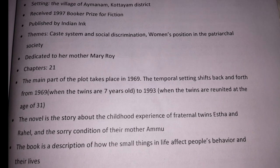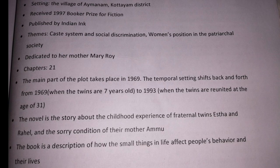The main part of the plot takes place in 1969, and the temporal setting shifts back and forth from 1969 when the twins are seven years old to 1993 when the twins are reunited at the age of 31 at the end of the novel. The novel is the story about the childhood experience of the fraternal twins Estha and Rahel, and the sorry condition of their mother Ammu. The book is a description of how the small things in life affect people's behavior and their lives.